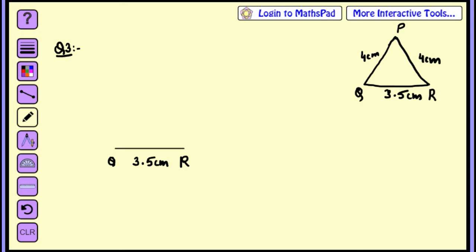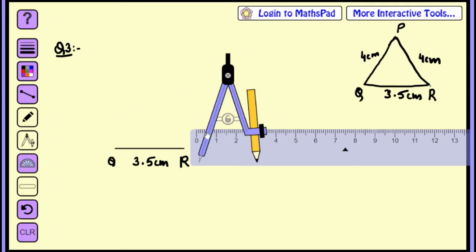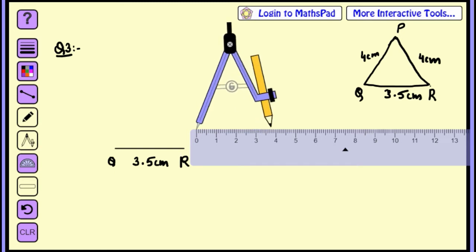Now take your compass. Now what do we need to do? We need to find the point P. We need to find Q from Q to 4cm and we need to add R to 4cm. So we need to find the point P where both the arcs are cut. That will be point P.